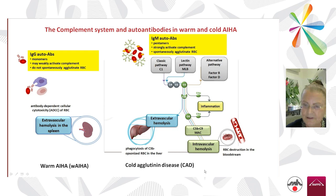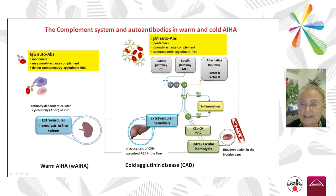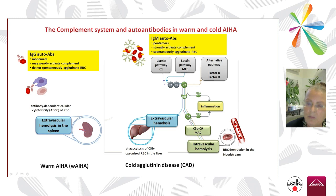Importantly, the complement system is differently involved in warm and cold disease. In IgG warm forms, monomers weakly activate complement and do not spontaneously agglutinate. The mechanism of destruction is extravascular hemolysis in the spleen, mediated via the Fc receptor and antibody-dependent cellular cytotoxicity. In cold forms, IgM fixes complement very well and can activate the classic and other pathways, with hemolysis mainly extravascular in the liver. If activation is very large, it can reach complete cascade activation and result in intravascular hemolysis.